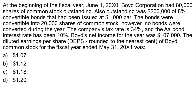Here we have a diluted earnings per share question. At the beginning of the fiscal year June 1st, Boyd Corporation had 80,000 shares of common stock outstanding. Also outstanding was $200,000 of 8% convertible bonds issued at $1,000 par, convertible into 20,000 shares of common stock. No bonds were converted during the year. The company's tax rate is 34%, the AA bond interest rate has been 10%, and Boyd's net income was $107,000. The question asks for diluted EPS rounded to the nearest cent for the fiscal year ended May 31st.